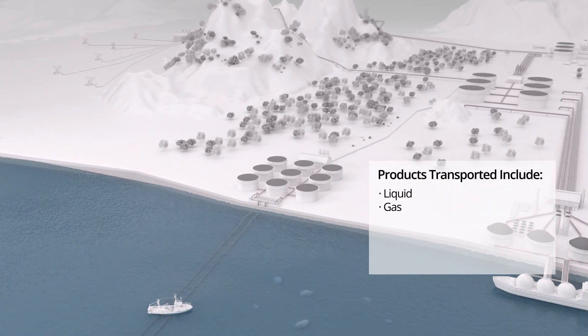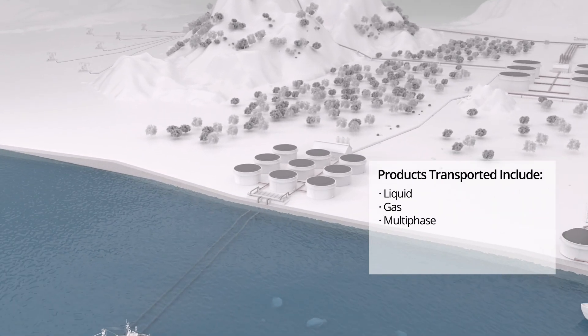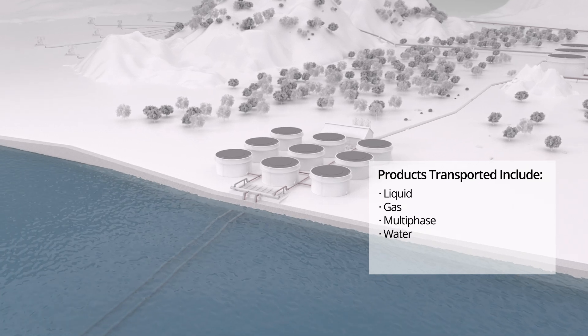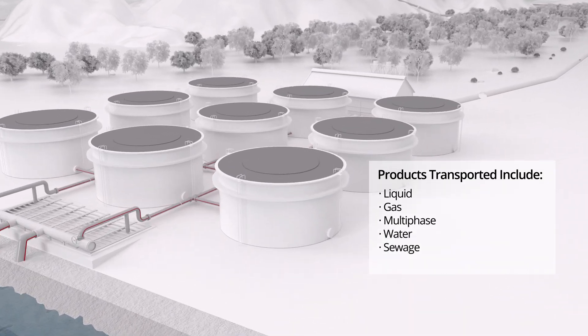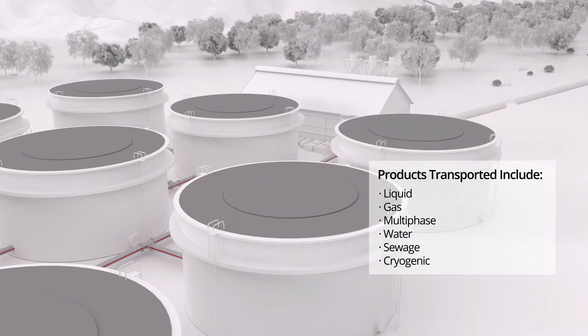AP Sensing monitors a range of pipelines including liquid, gas, multi-phase, water, sewage, and cryogenic pipelines.